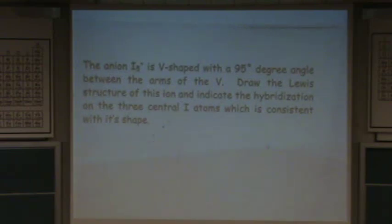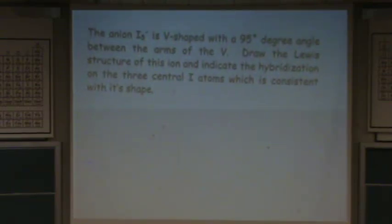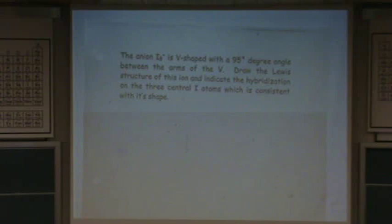So I5 minus. Let's try this. And we're going to do the full Lewis, everything. So we'll do shape, electronic shape, molecular geometry, hybridization, bond angles, polarity, everything, okay?